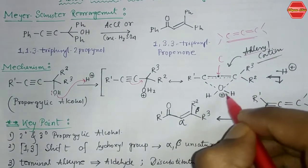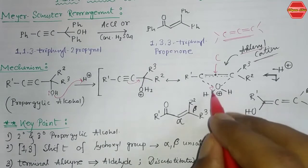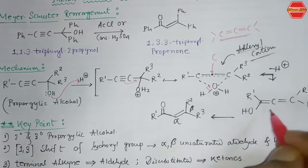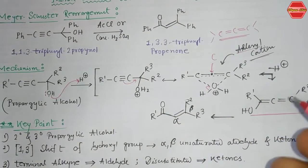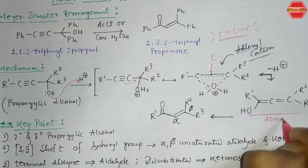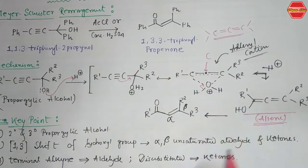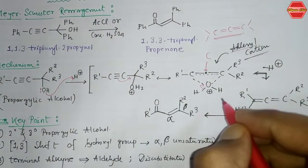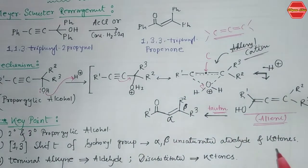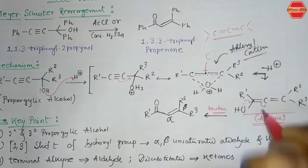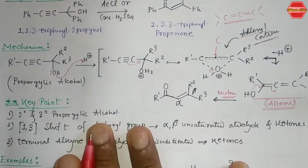From here, the OH⁻ (water) loses its proton, giving an OH group, and you get this allene-type derivative. This allene derivative is not very stable, so it readily tautomerizes to give an α,β-unsaturated ketone. That tautomerization gives you the α,β-unsaturated ketone.